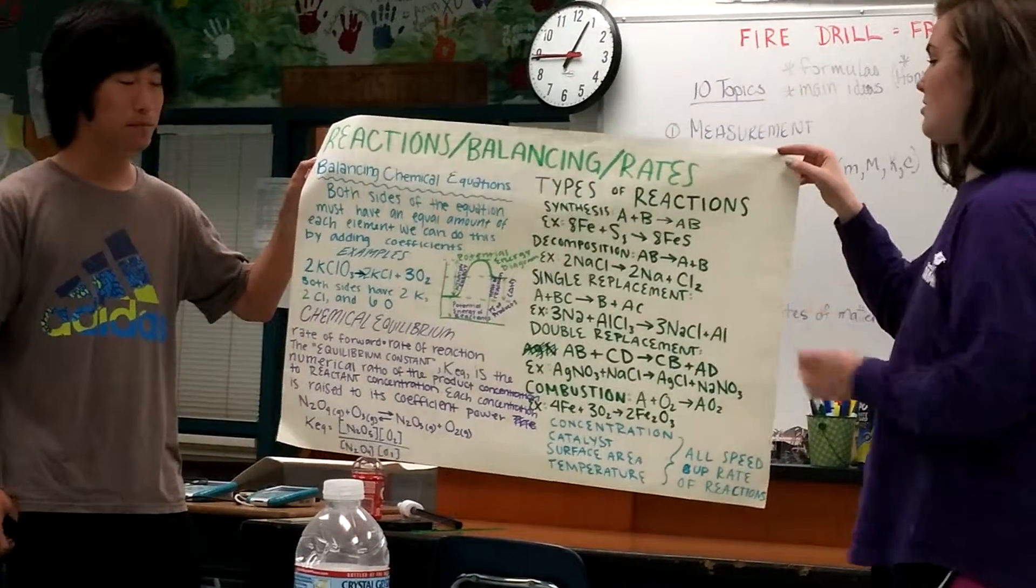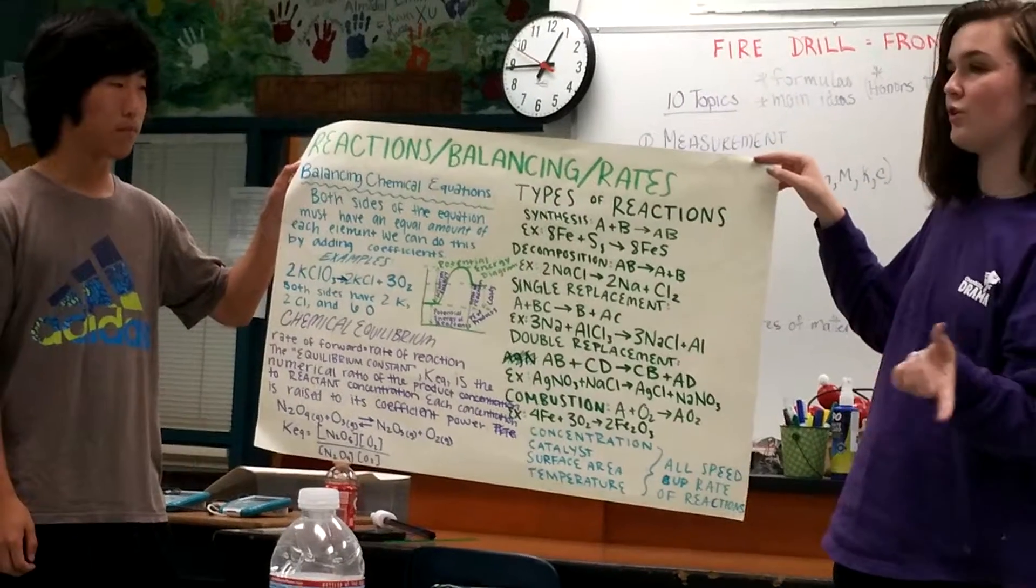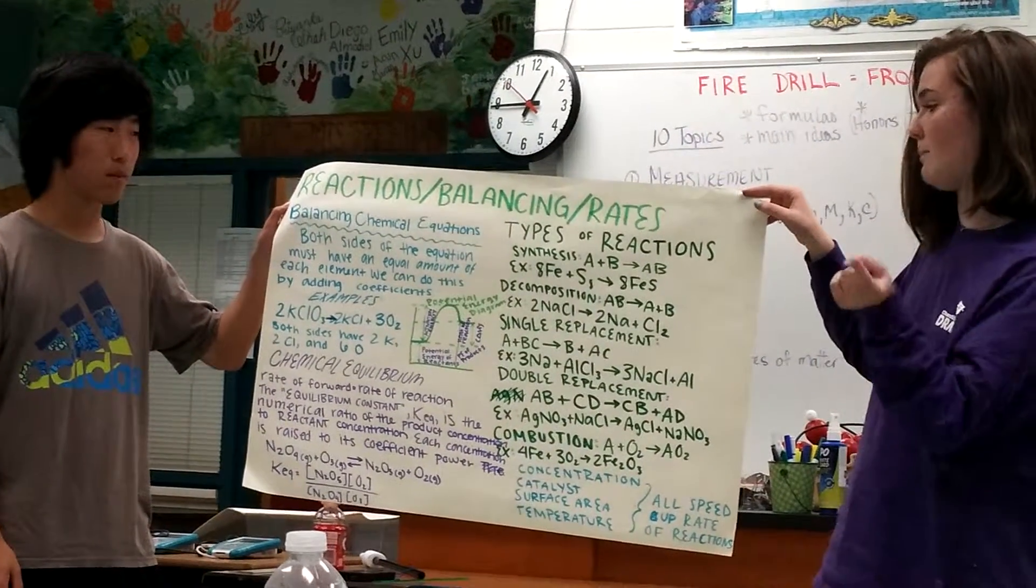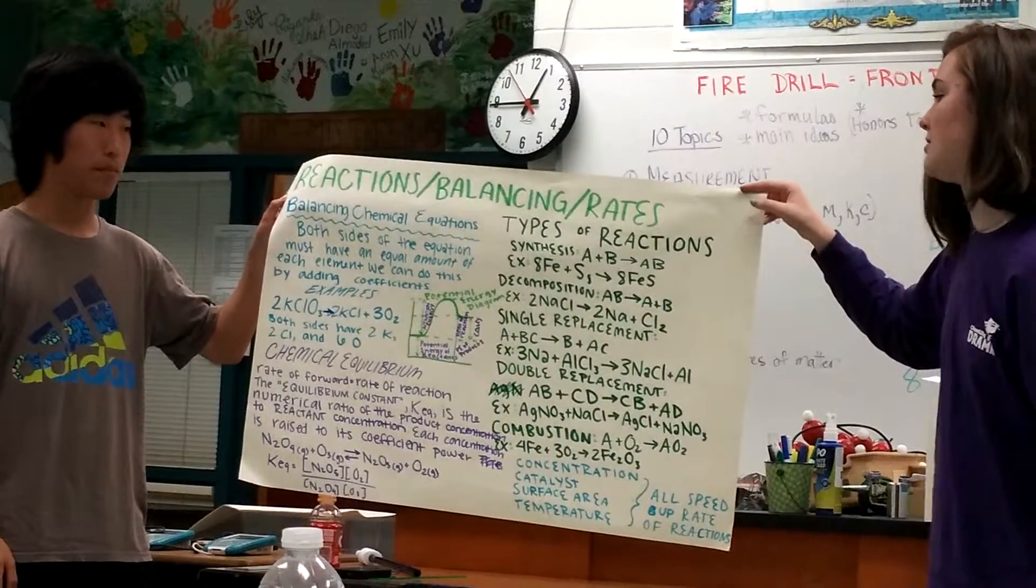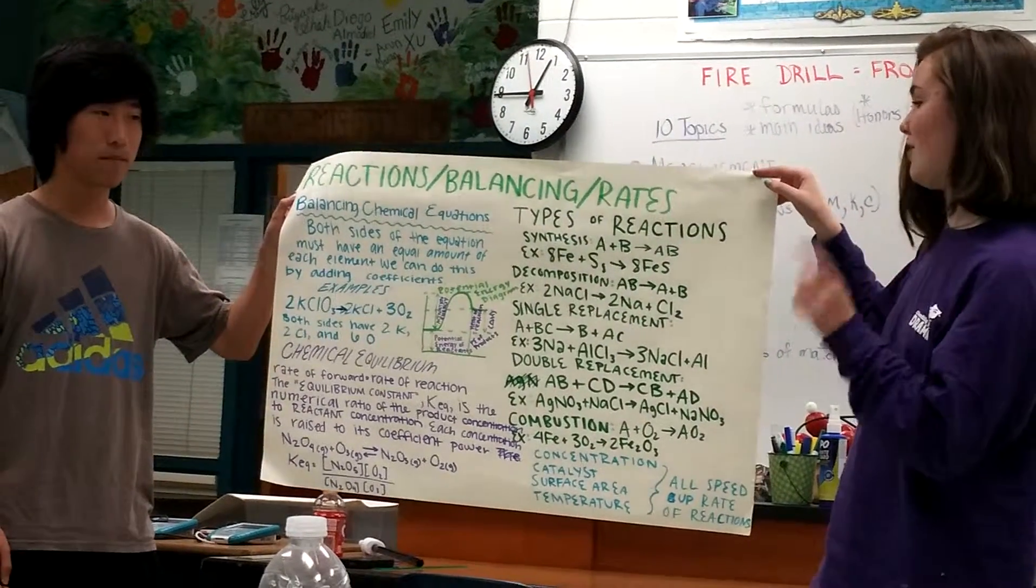So there's different types of reactions. First kind is synthesis, which is when you're combining two things. So A plus B is AB. And an example of that is 8 iron plus SA is 8 iron salt.